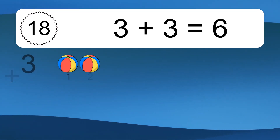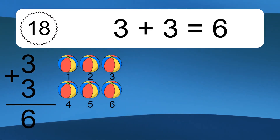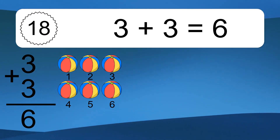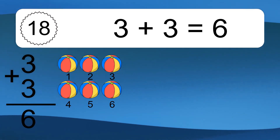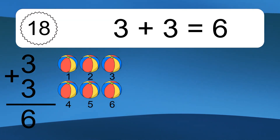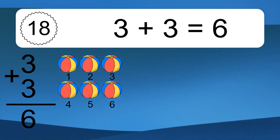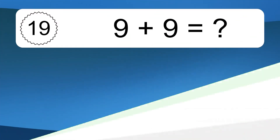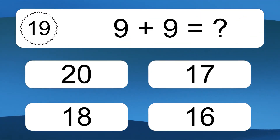3 plus 3 equals what? 3 plus 3 equals 6. Let's count it: 1, 2, 3, 4, 5, 6. 9 plus 9 equals what?